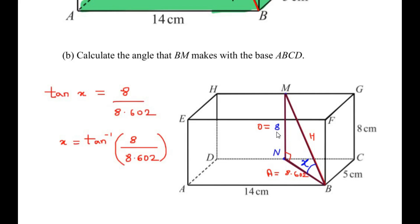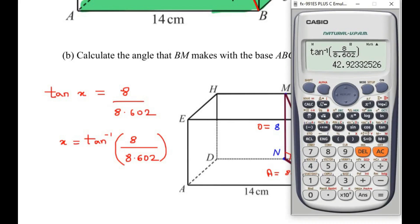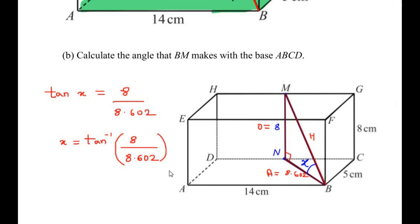So tan x = 8 / 8.602. Taking the inverse, x = tan⁻¹(8 / 8.602), which gives x = 42.92 degrees. The angle made by BM with the base ABCD is 42.92 degrees. I hope you understood all the steps and liked the video. If you found it interesting, click on the playlist to find more videos on trigonometry, and like, share, and subscribe to my channel.